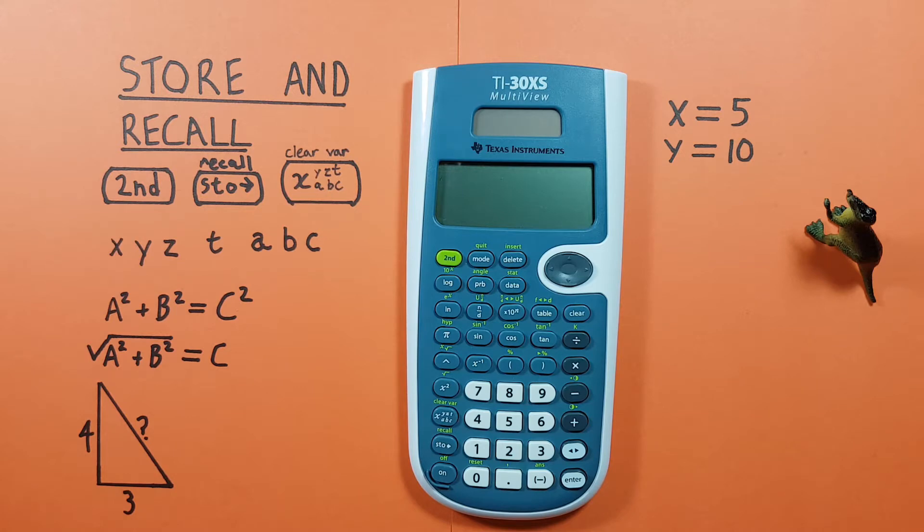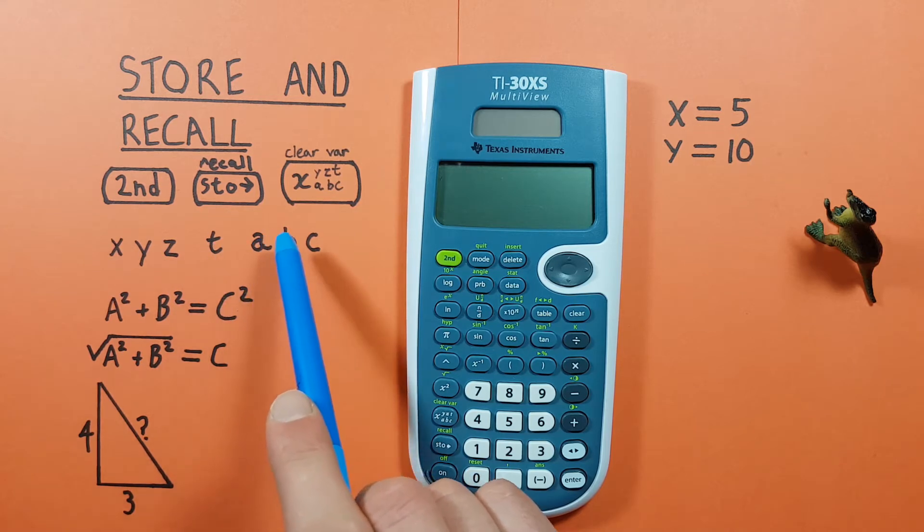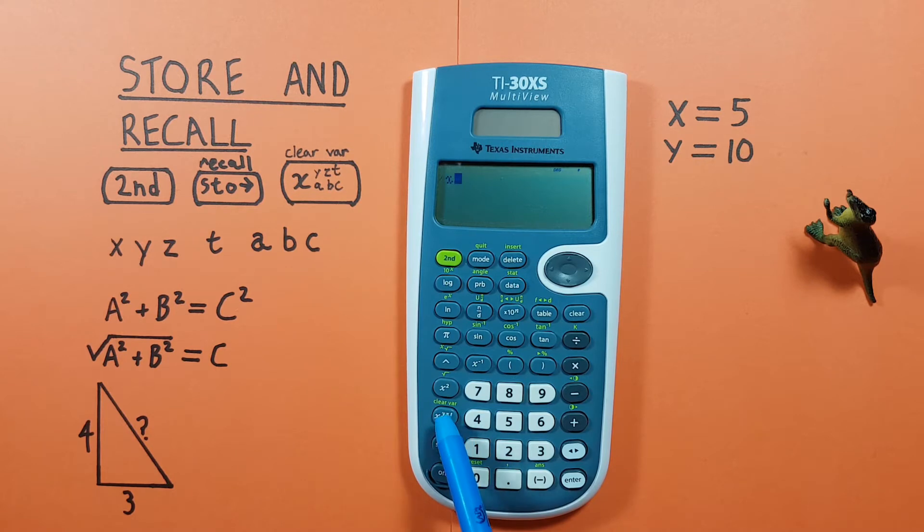The first thing to know is this calculator has seven memory slots: X, Y, Z, T, A, B, and C. When we press the memory slot key we see that we cycle between them.